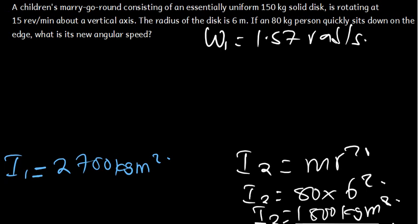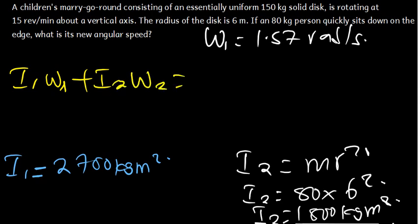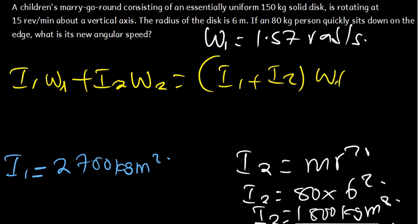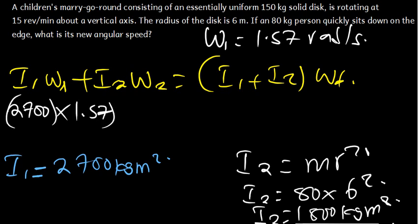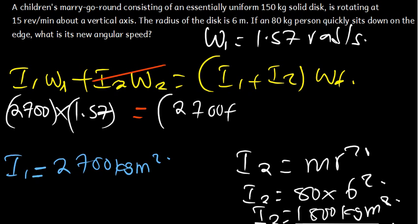Our goal is to find the new speed. We apply the formula: inertia one times angular speed one, plus inertia two times angular speed two, equals inertia one plus inertia two times the final speed. The inertia of the disk is 2,700 and ω₁ is 1.57. Initially, the person was not moving, so the angular velocity for the person was zero — that term drops out. The right side is 2,700 plus 1,800 times the final speed.